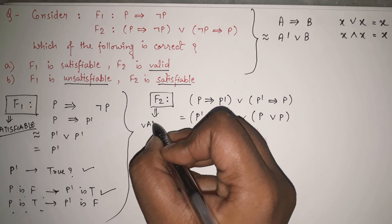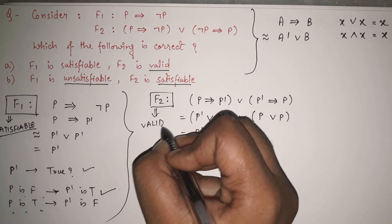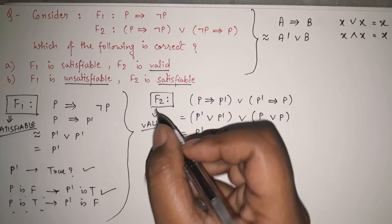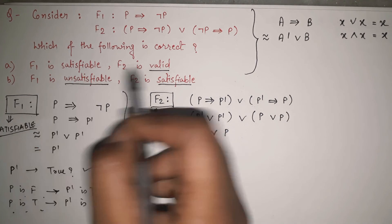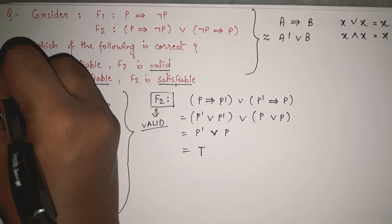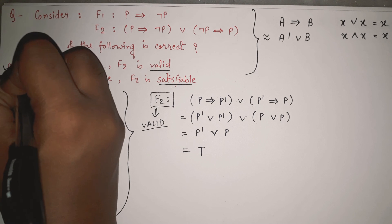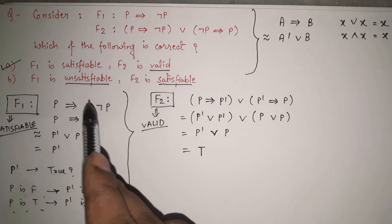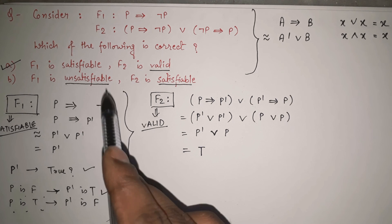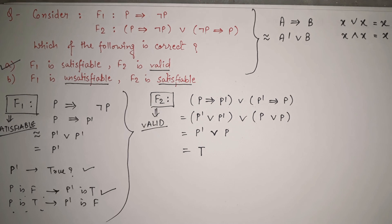So I have proved that F2 is valid and F1 is satisfiable, which matches option A. So option A is correct: F1 is satisfiable and F2 is valid. I hope you have understood it. Thank you.